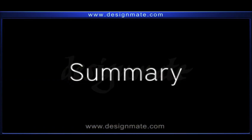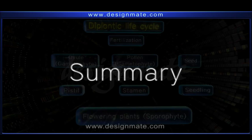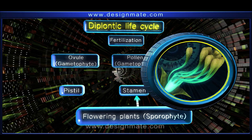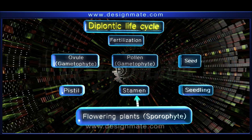Summary: In flowering plants, the flowers represent the sporophyte. In this life cycle, the sporophyte — which is the flowering plant — bears the stamen and the pistil.